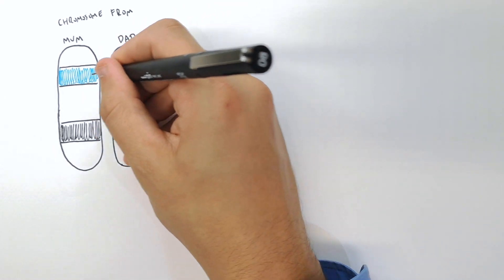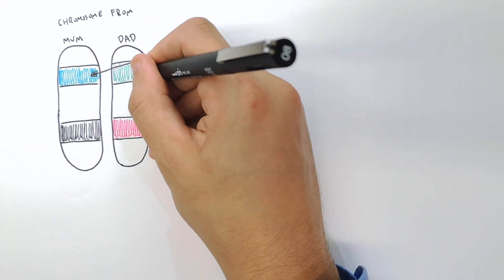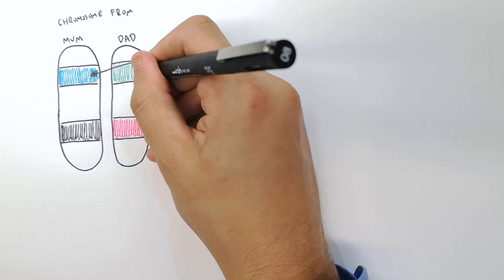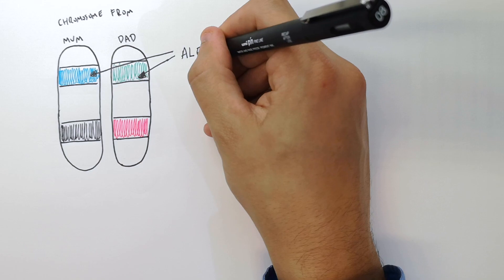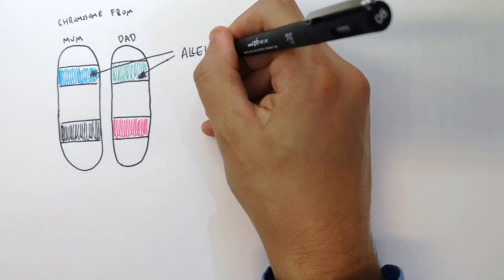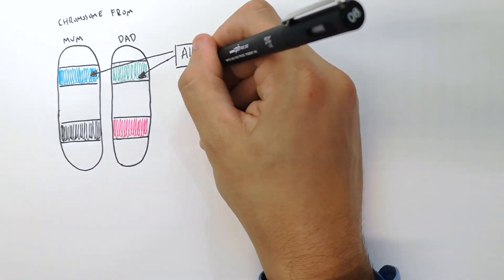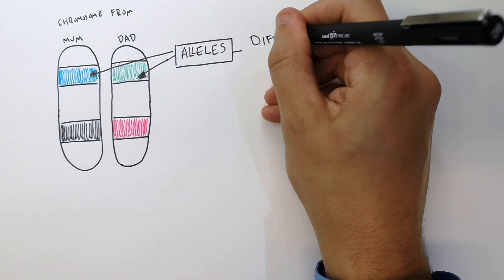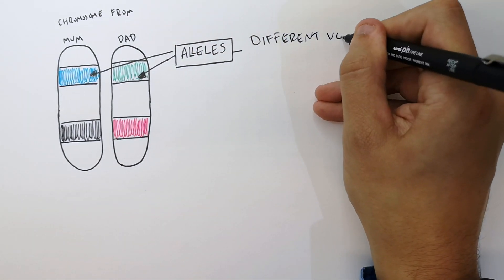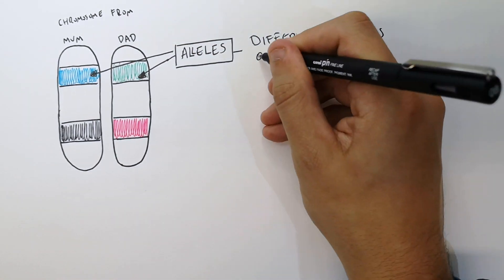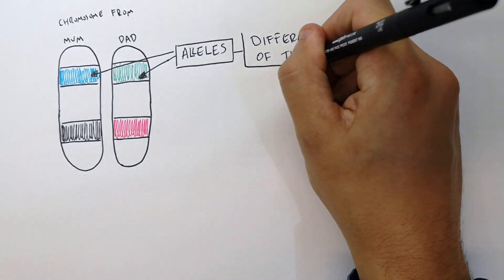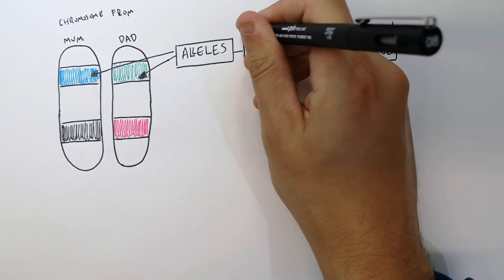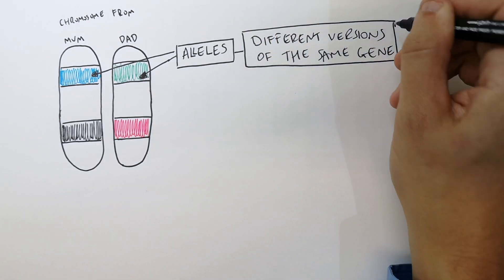This person has inherited one gene from mum and one gene from dad, and they're different. So they are alleles. Alleles are different versions of the same gene.